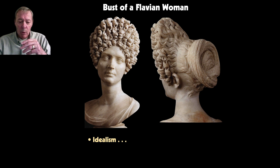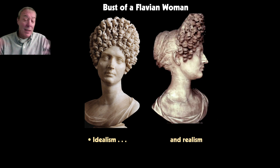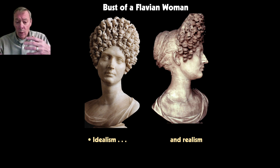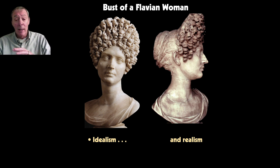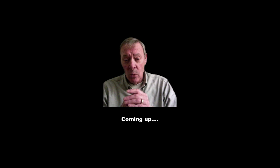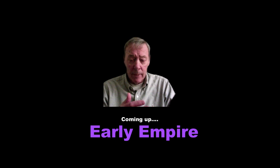Imagine my surprise when I walked around to the side and saw it from a different angle—not quite so idealized, but rather somewhat more realistic and plain. The interesting thing is it's all the same sculpture, but depending on your point of view it is either idealized or realistic—an interesting combination of the two approaches. With that we finish our look at the Republican era of Roman history. In the next lecture we'll take a look at the early empire, the coming of the emperors, and the demise of the republic.